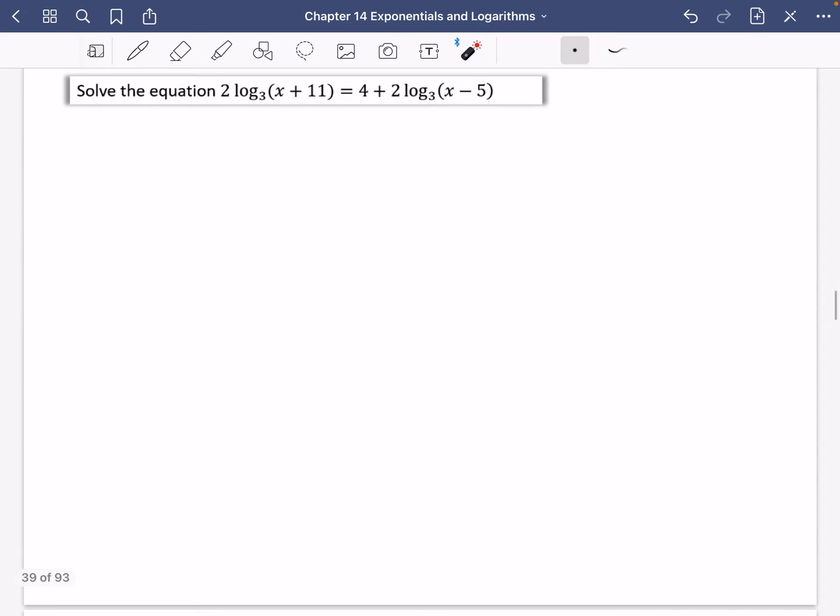OK, this time we've got logs on both sides of the equation. So we're going to need to collect them together. So I have 2 log base 3 of x plus 11 minus 2 log base 3 of x minus 5 equals 4. So you've got a couple of different options here. You could factorize out the 2, or we could put the 2 back inside the powers. I think I'm probably going to put the 2 back inside the powers. So I've got log base 3 of (x+11)² minus log base 3 of (x-5)² is equal to 4.